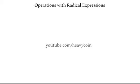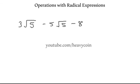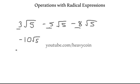We start with a fairly easy example. If I had 3 square roots of 5 minus 5 square roots of 5 and 8 square roots of 5, and we wanted to simplify this completely down — you notice we have a square root of 5 in each one of these terms. Since they're all alike, what we can do is just add their coefficients. So 3 minus 5 minus 8 is going to be negative 10, and then you just write square root of 5.